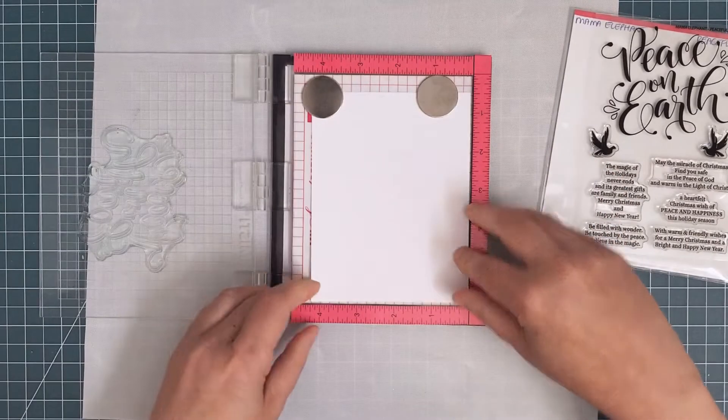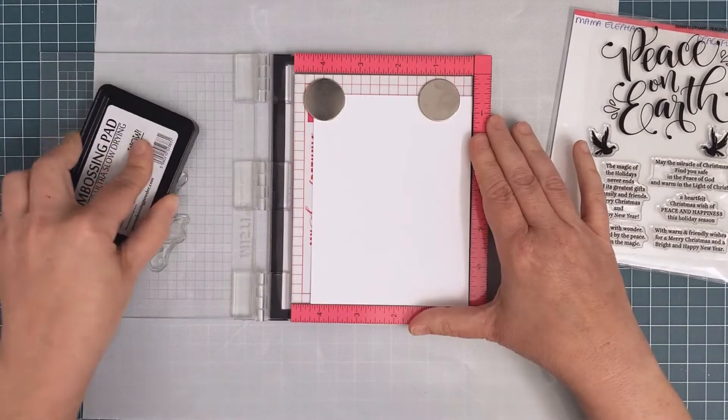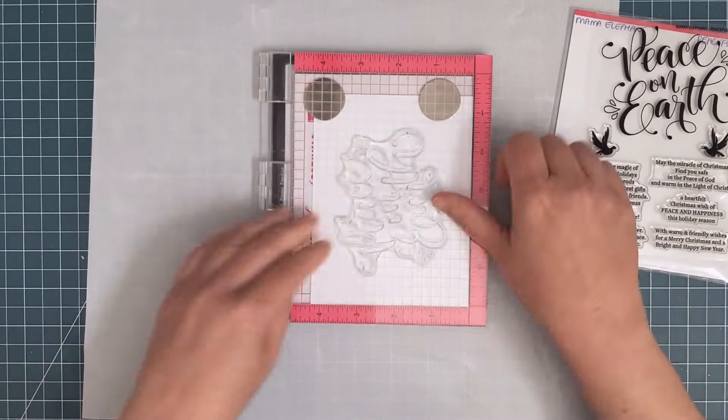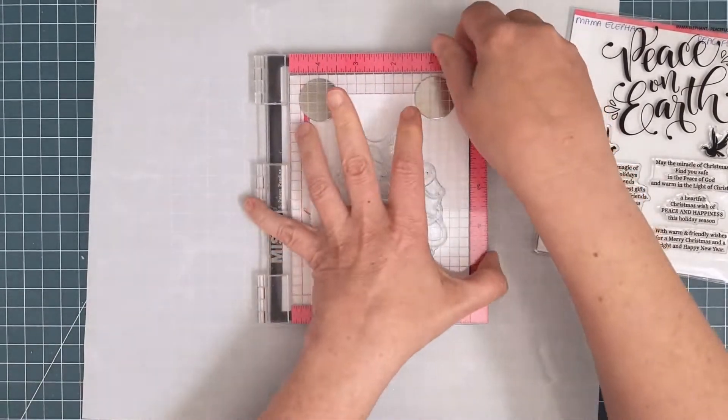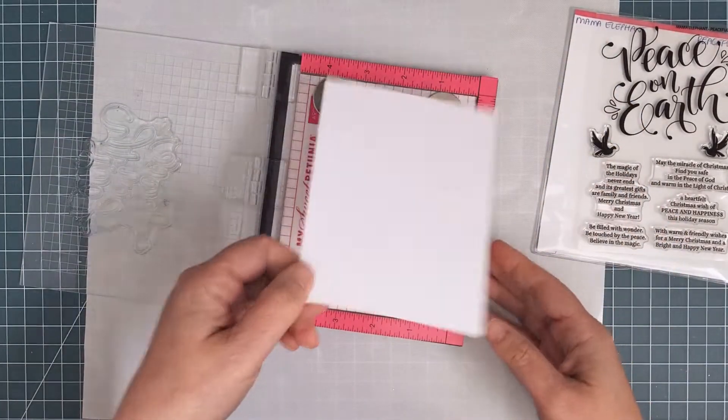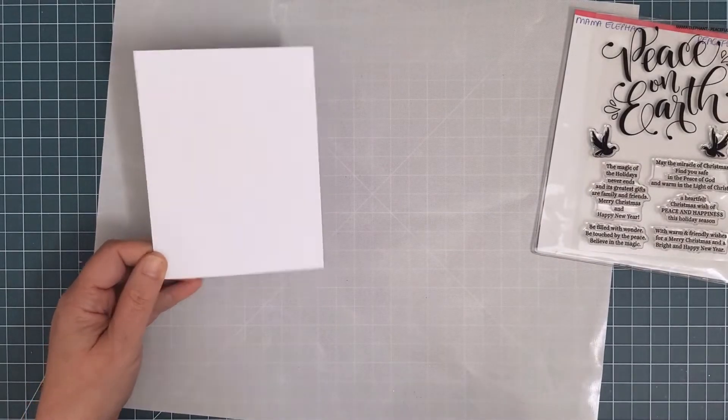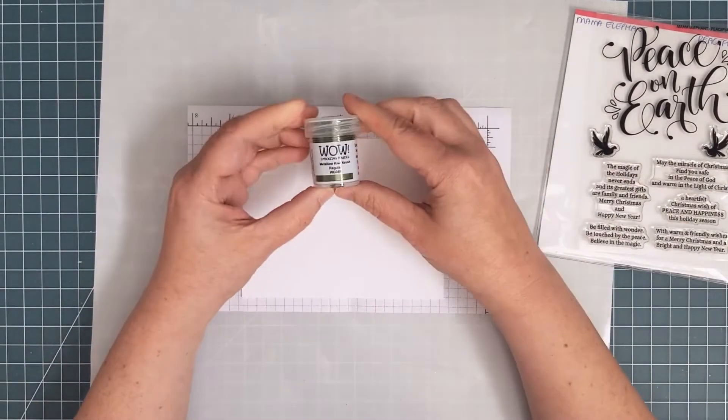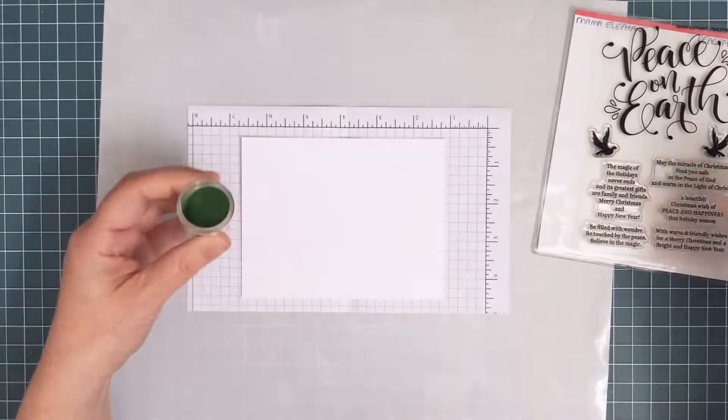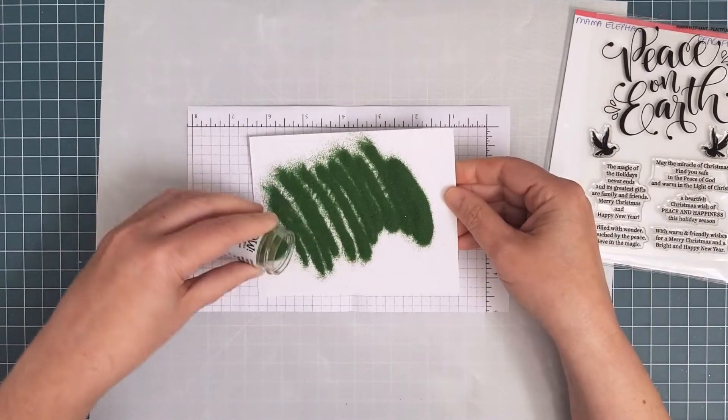I stamped it twice to make sure I got a good impression but I must have moved the paper slightly because it didn't stamp in the exact same spot. Of course I couldn't tell until I poured the embossing powder over. I used Kiwi Crush Powder, pouring it over the panel and tapping off the excess.